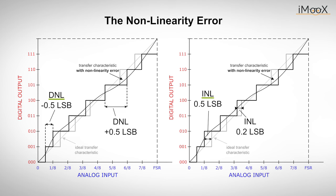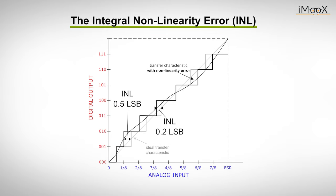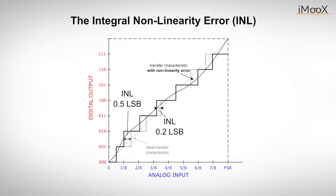It is important to distinguish them because their effects differ depending on the application. For the integral non-linearity error, the transfer curve is pretty self-explanatory: we see a somewhat bent output curve compared to the ideal straight characteristic. The INL is defined as the maximum deviation of the ideal straight line from the actual digital output, measured in the middle of the corresponding step. This error dominates in applications where the digital value of an analog voltage must be accurately hit, such as ADCs used for audio applications.